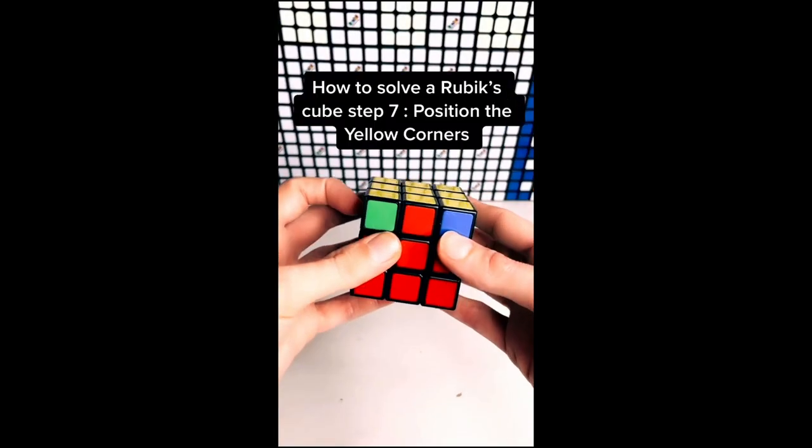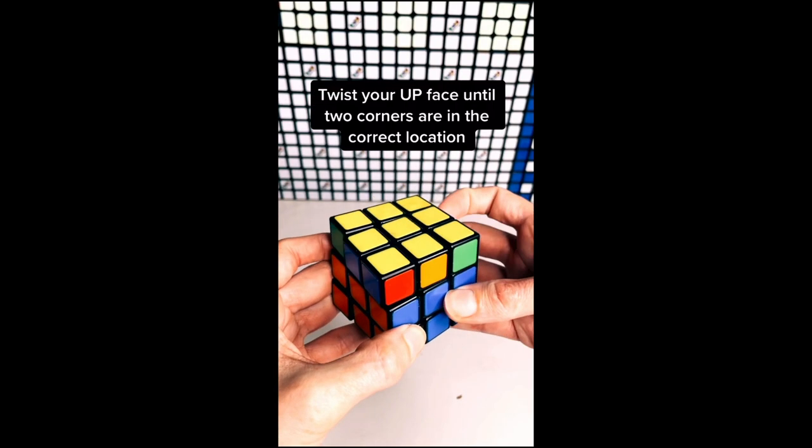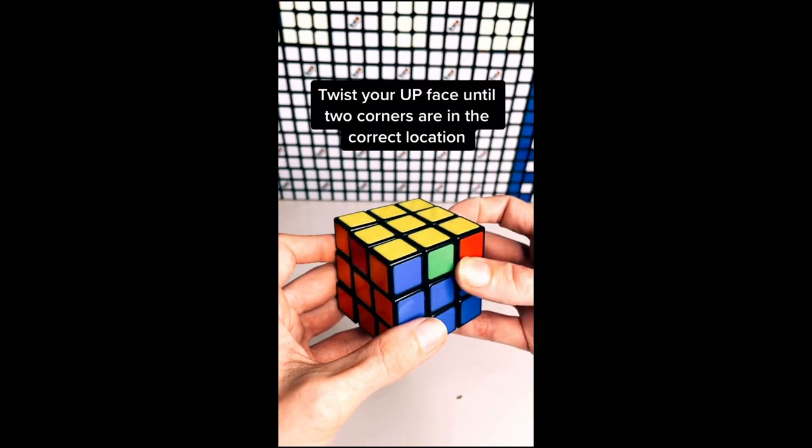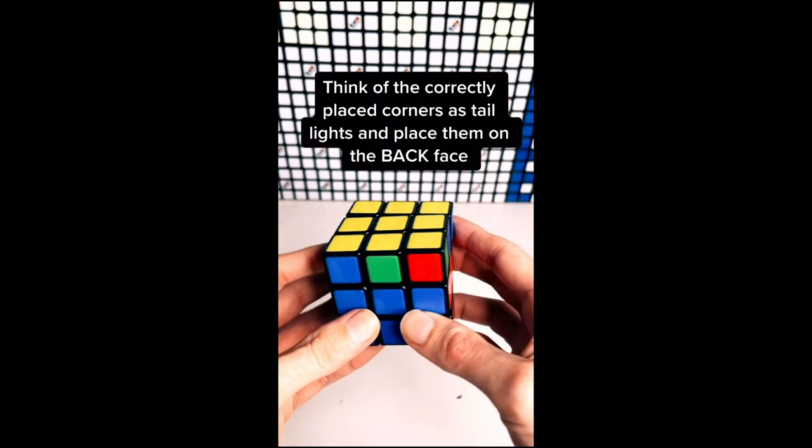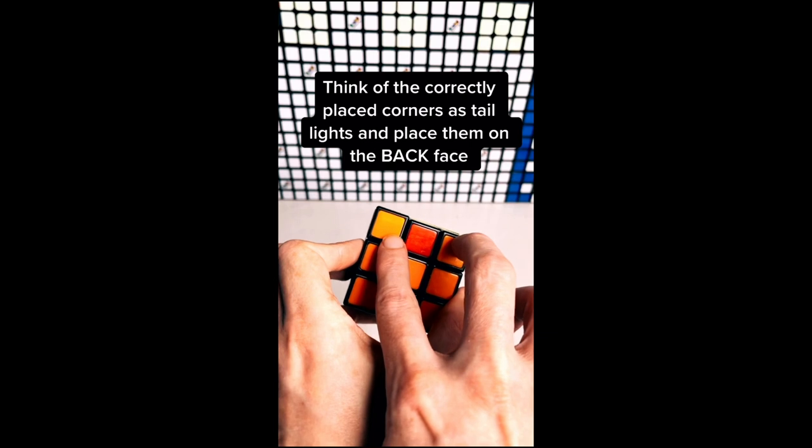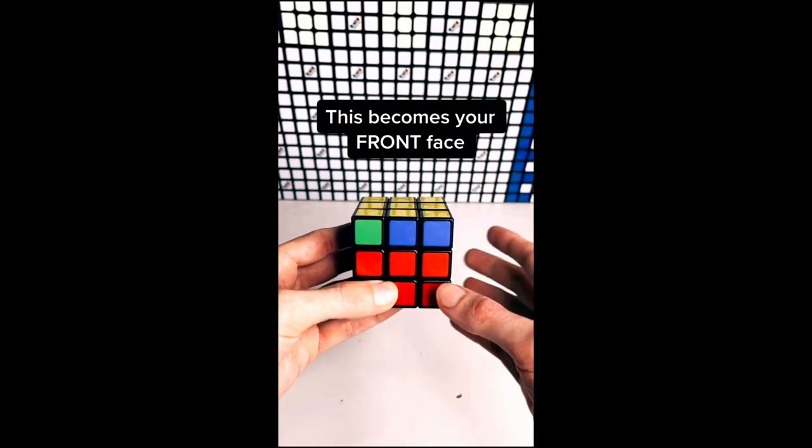How to solve a Rubik's Cube step 7: Position the yellow corners. Twist your up face until two corners are in the correct location. Think of the correctly placed corners as taillights and place them on the back face. This becomes your front face.